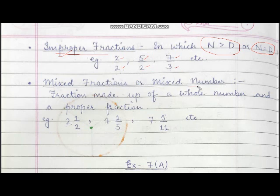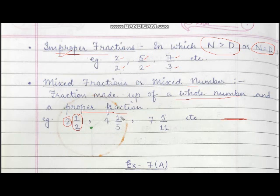Now, what is a mixed fraction or mixed number? It is a fraction made up of a whole number and a proper fraction. So there is a whole number, and next to it there is a proper fraction. We will write the whole number on the line, and after that we will write a proper fraction. For example: 2 and 1 upon 2; 4 and 1 upon 5; 7 and 5 upon 11. These are examples of mixed fractions.